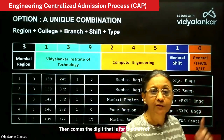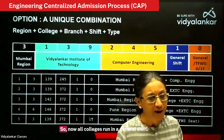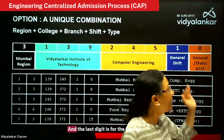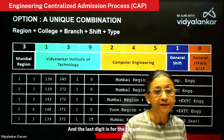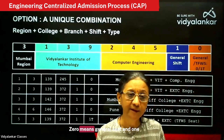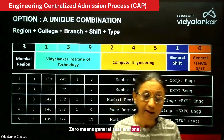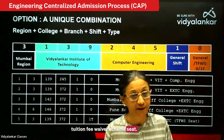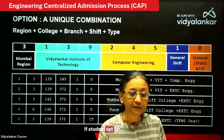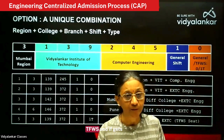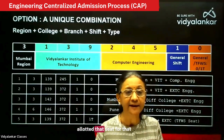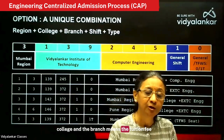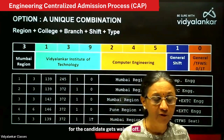Then comes the digit for the shift of the college. Currently all colleges run in a general shift, so by default that digit will be 1. The last digit is for the type of seat: 0 means general seat and 1 means TFWS — tuition fee waiver scheme seat. If a student opts for TFWS and gets allotted that seat for that college and branch, the tuition fee for the candidate gets waived off.